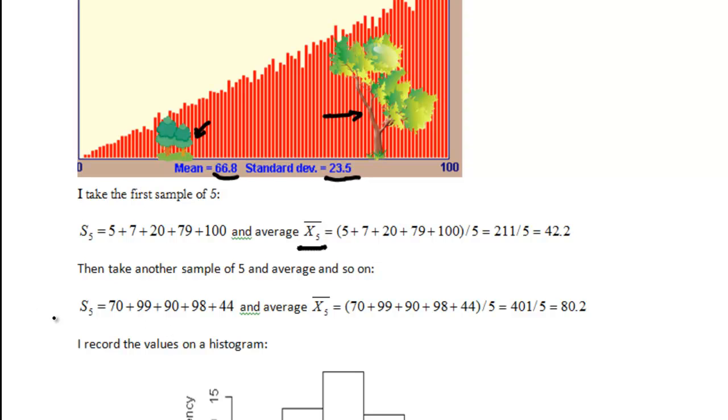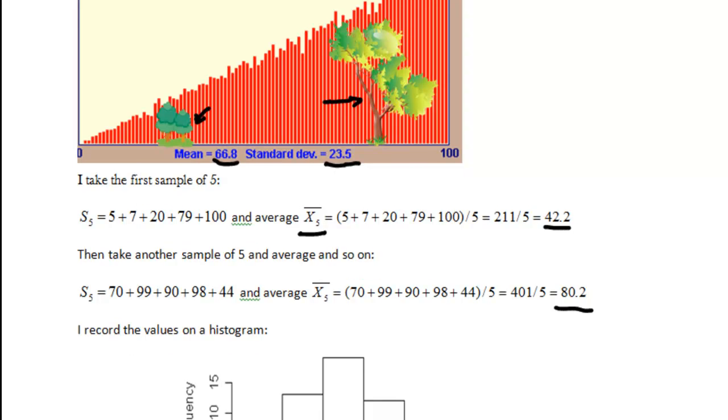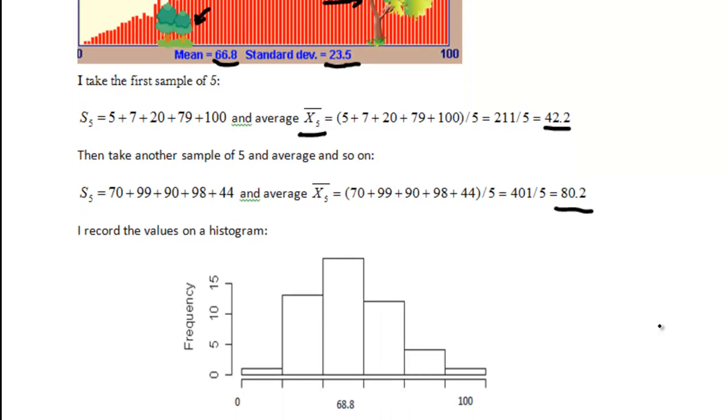Okay, and the next thing I do I go and select the second sample and I do it likewise I average the sample. I get 80.2. For the first one I got 42.2. The next step obviously is to record these values and the best way to do it is some kind of histogram.